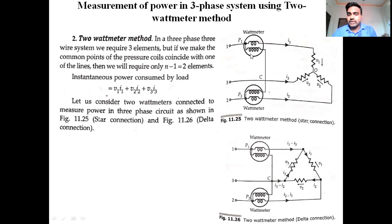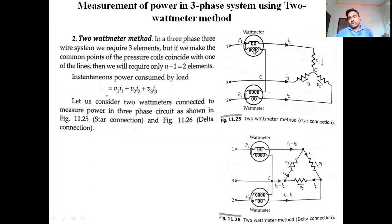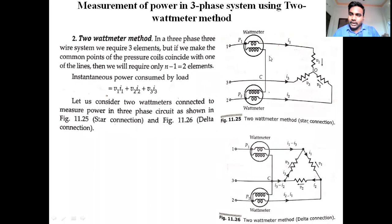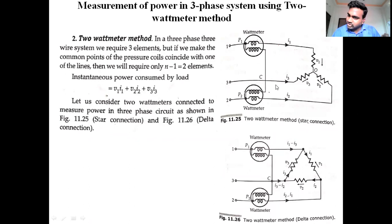Power measurement will be done with 2 elements: element 1 gives P1 and element 2 gives P2. In a three-phase three-wire system with three elements, we connected the voltage coil common point on one of the lines, making it N minus 1 = 2 elements. The total instantaneous power P = V1·I1 + V2·I2 + V3·I3.